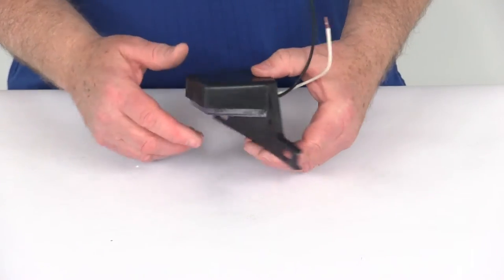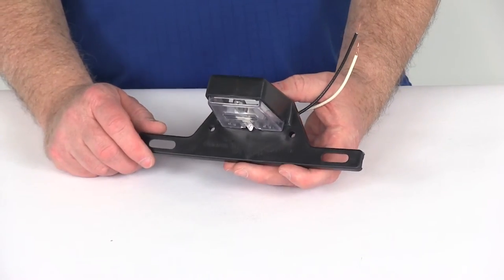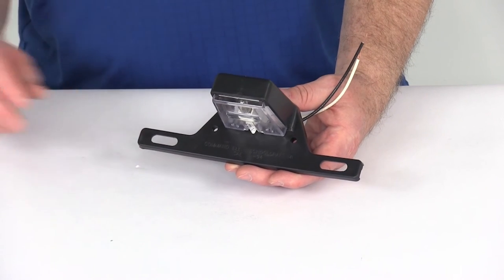But that should do it for the review on the Thule replacement license plate bracket with light for the Thule Terrapin hitch-mounted cargo carrier.